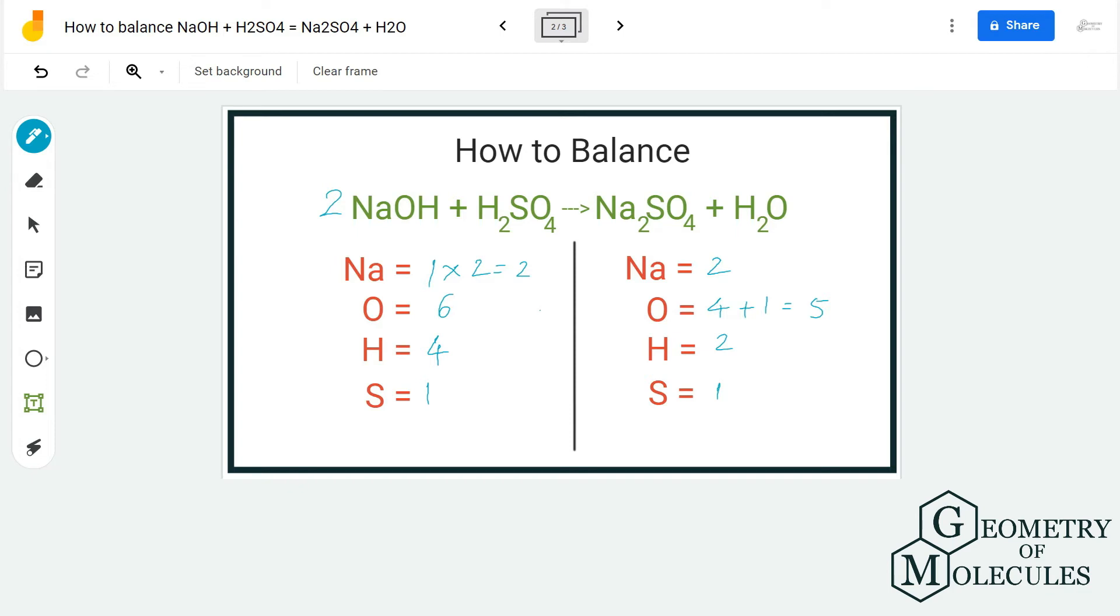For sodium atoms we have the same number of atoms on both reactant and product side, so that is balanced. We do not need to go over it. Oxygen atom we are going to balance it afterwards, but first we are going to look at the hydrogen atoms. As you can see here, hydrogen atoms is 4 for the reactant side and 2 for the product side, so first we need to fix this.